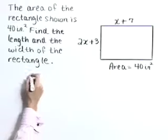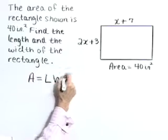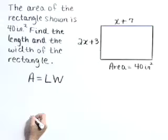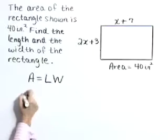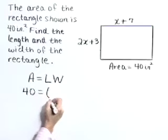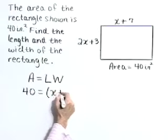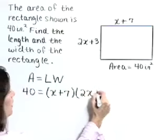Let's start here by writing our area formula for the rectangle, which is area equals length times width. Now, let's substitute values into this formula. We're given that the area is 40 square inches, the length is described as x + 7, and the width as 2x + 3.